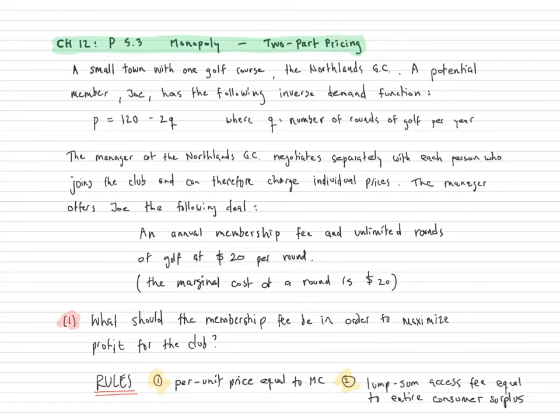The example here is a small town with just one golf course. This is crazy of course, but there's only one golf course in this small town. It's called Northlands Golf Club. A potential member, Joey, has the following inverse demand function: P equals 120 minus 2Q, where Q is the number of rounds per year.